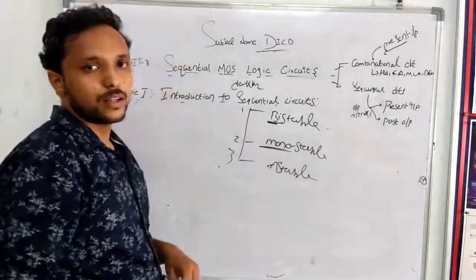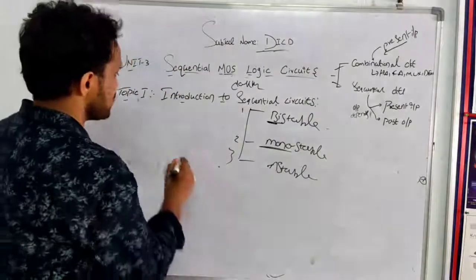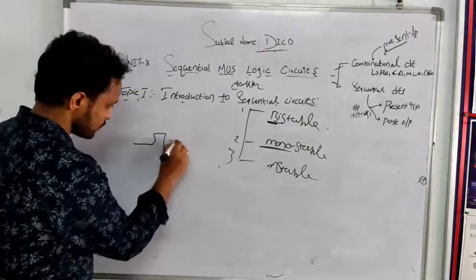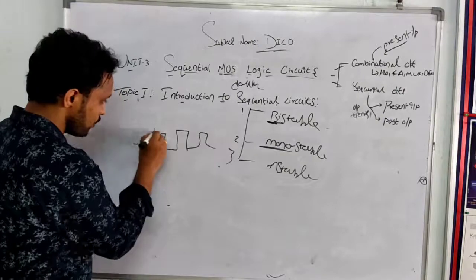So any circuit can be explained based on the states. I will give an example: 0, 1, 0, 1.